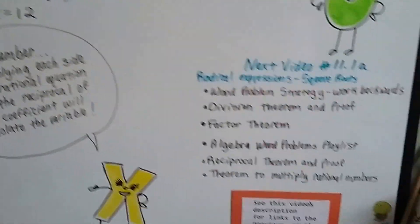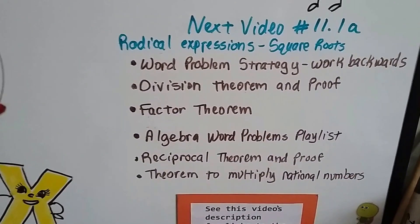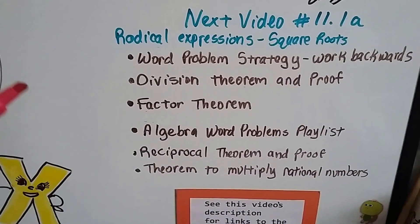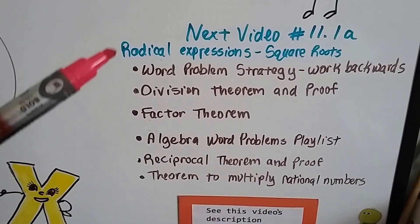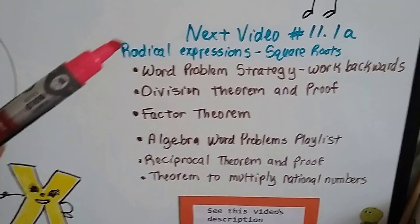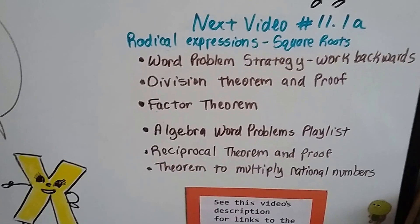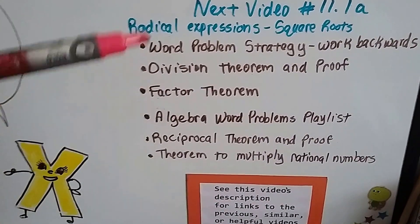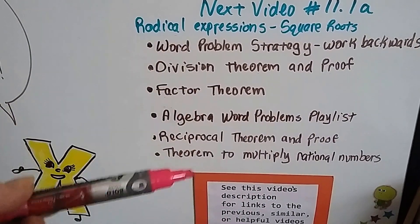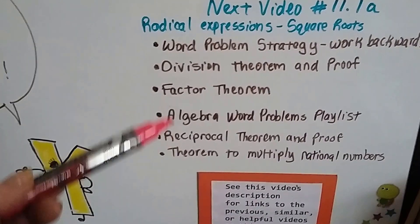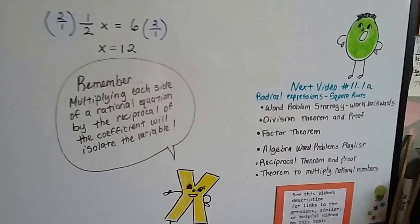Alright? Our next video, number 11.1a, we're going to talk about radical expressions. Now, throughout the whole chapter 10, we've been talking about rational expressions, fractions, decimals. Now we're going to talk about radical expressions and equations. We're going to talk about square roots. And of course, like always, if you want to go to any of the links in chapter 10 that we talked about, the proofs, the theorems, working backwards strategy, and there'll be a link to my algebra word problem playlist, just click on the description of this video.